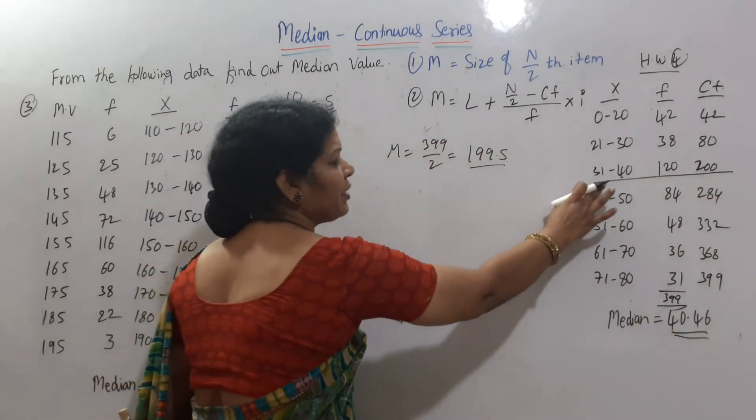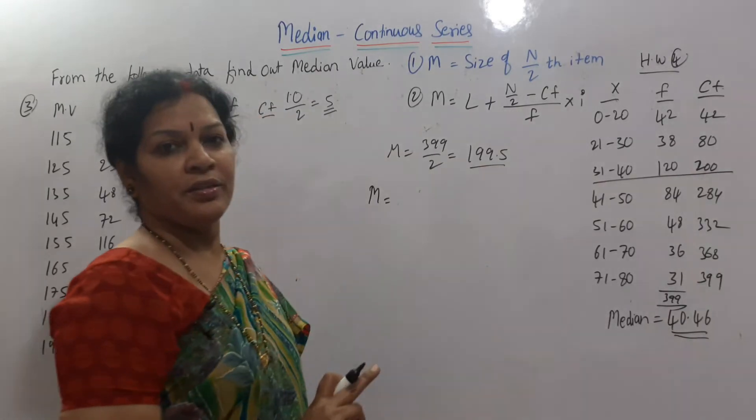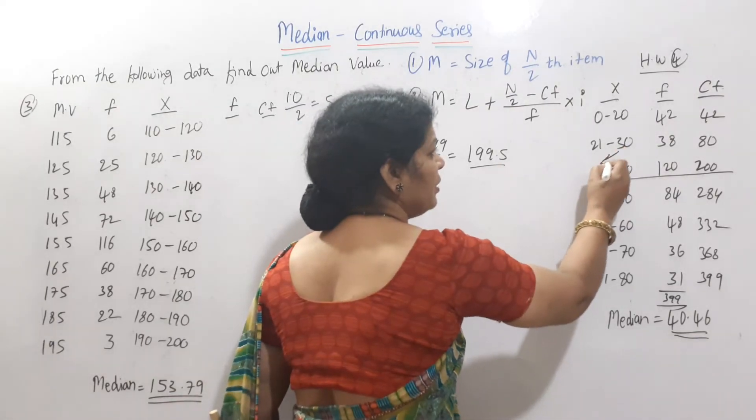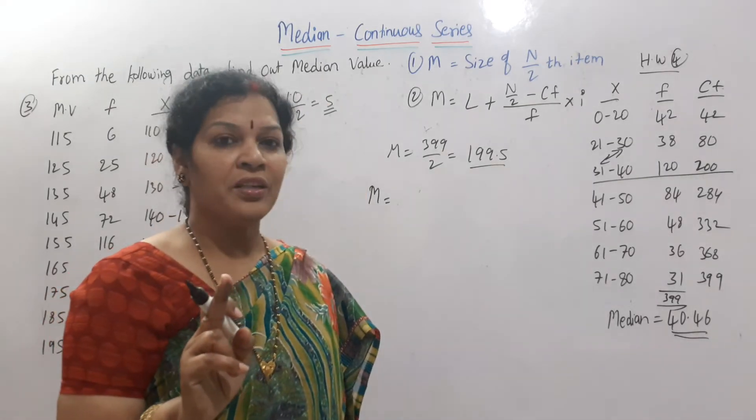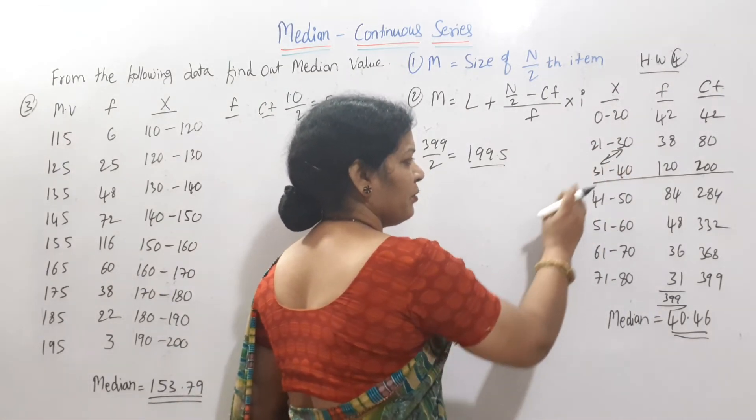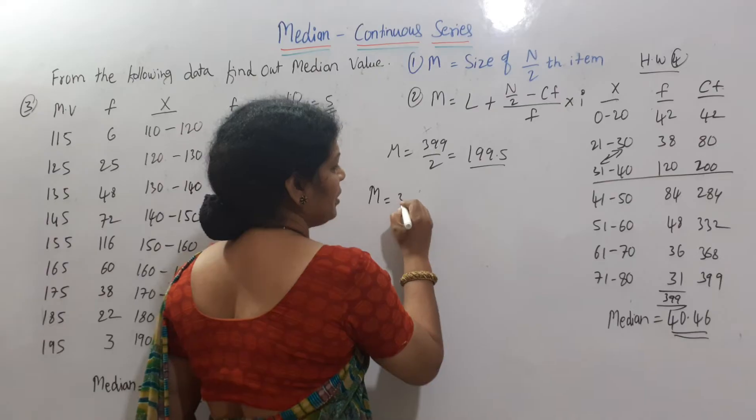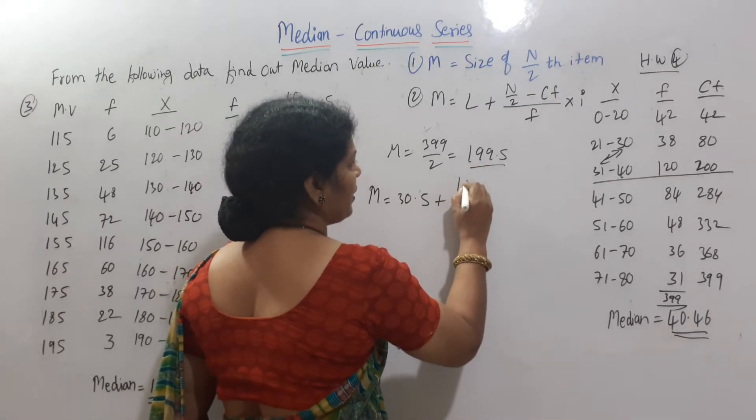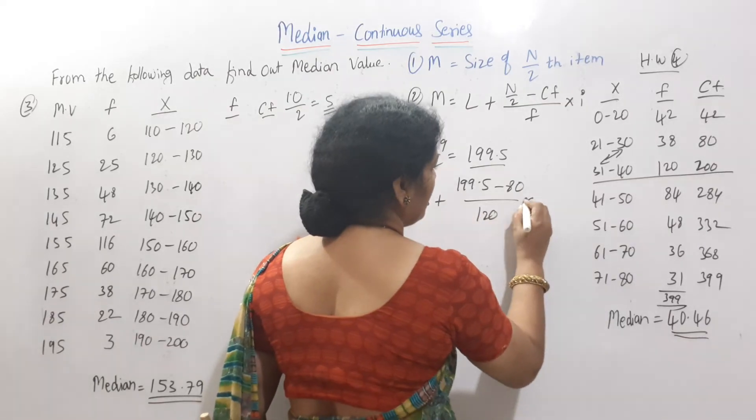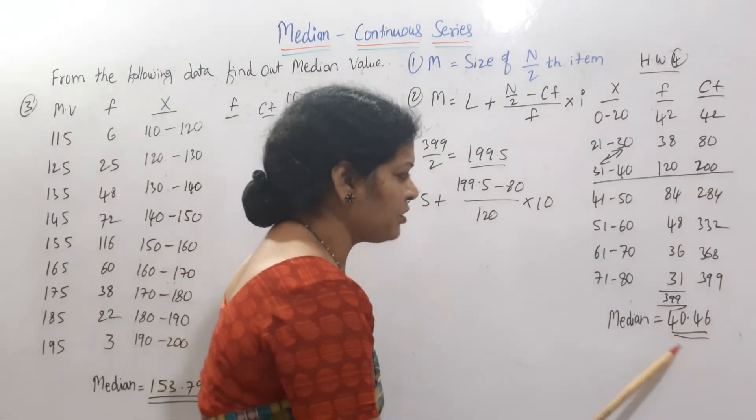So only the thing is you have to be very careful while writing L. So L value median is equal to L value is 30.5. Both upper and lower class interval will be 30.5. The difference is here, both of this difference is 1. If you make it half, 0.5. For every value, 0.5 you are deducting, 0.5 you are adding. So L value is 30.5 plus n by 2 means 199.5 minus cf is 80, by frequency is 120, into class interval is 10. The rest of the problem you can do it. The answer is 40.46.